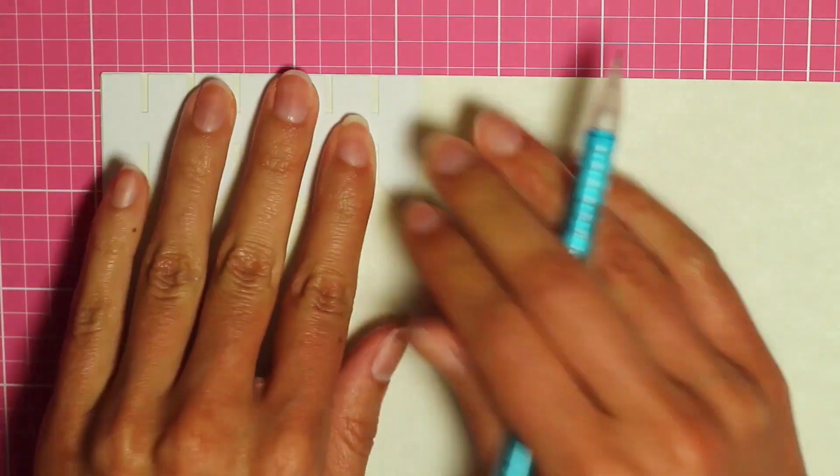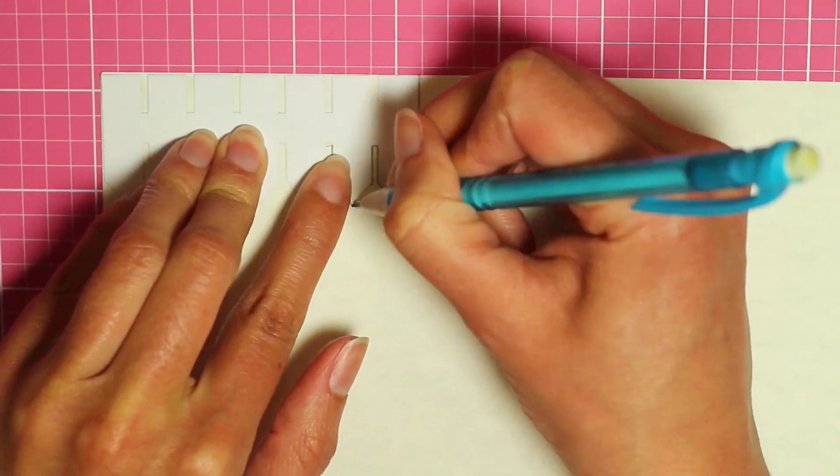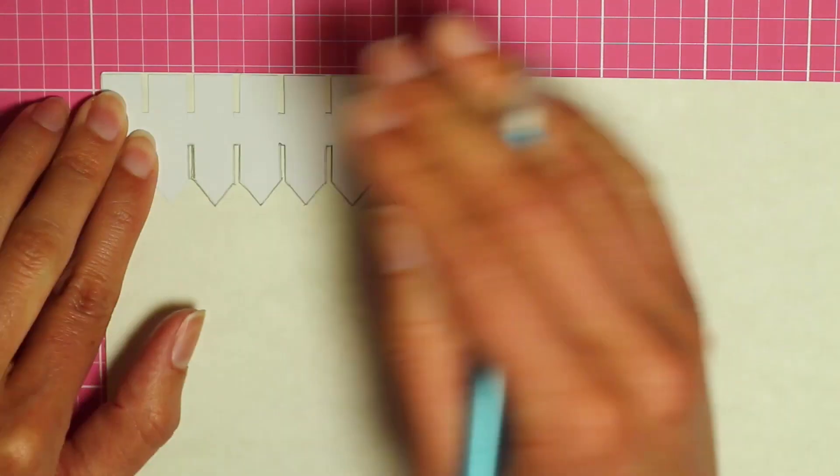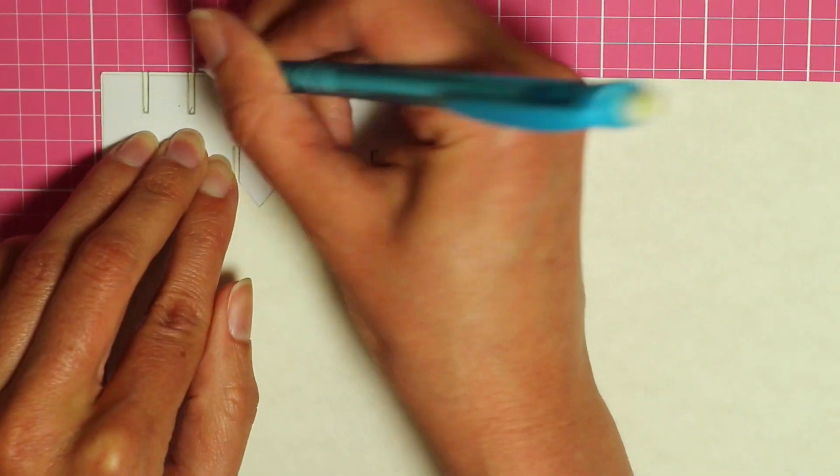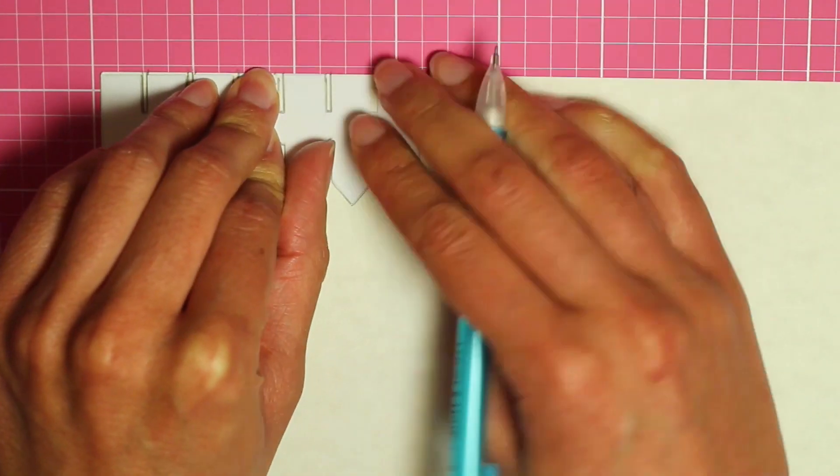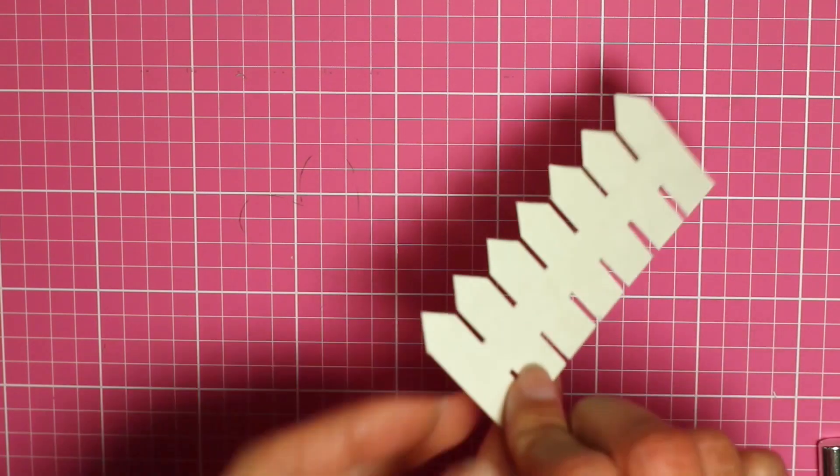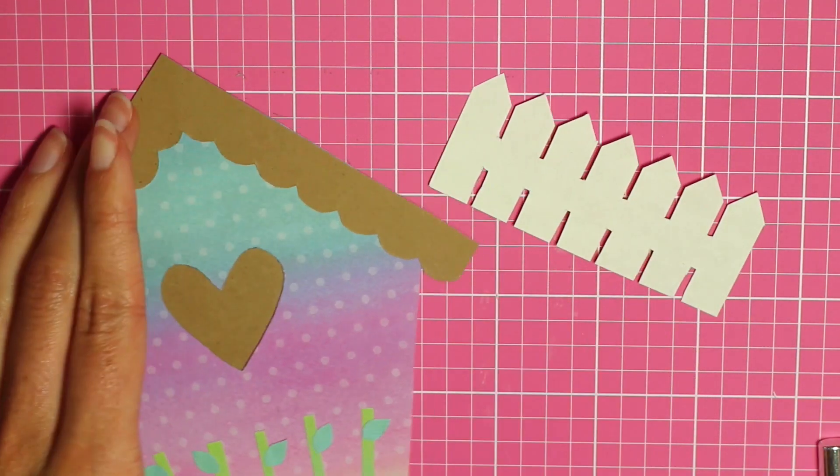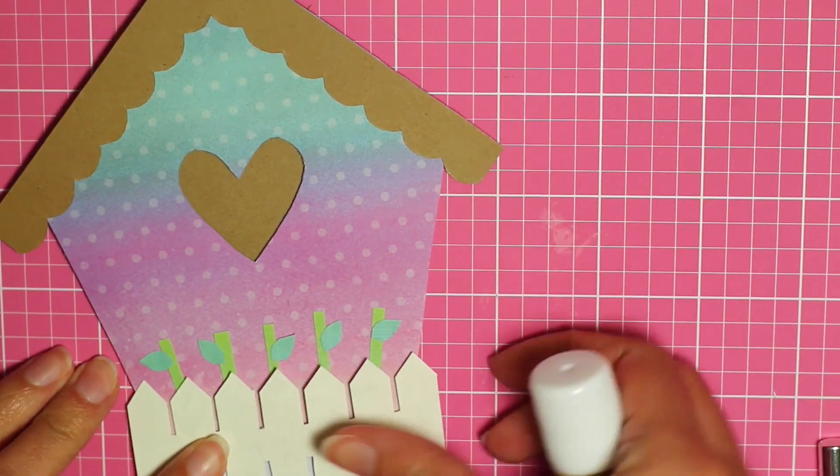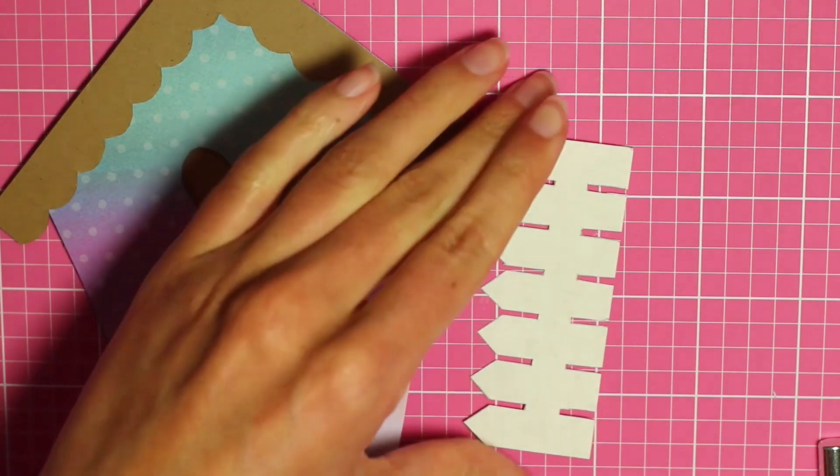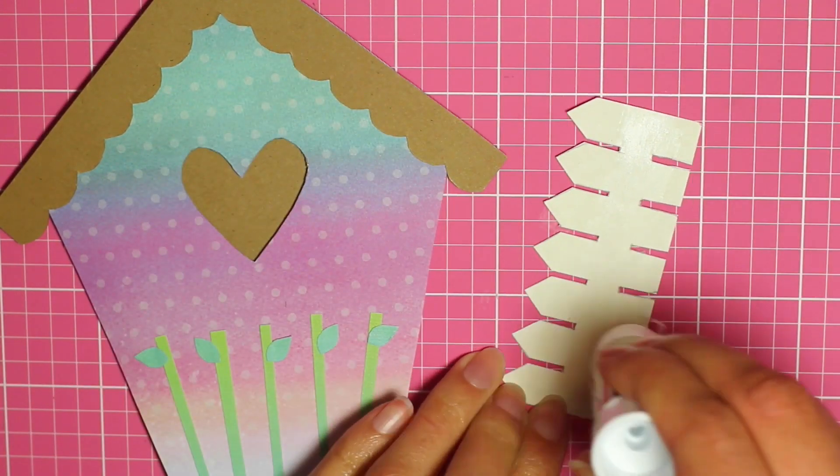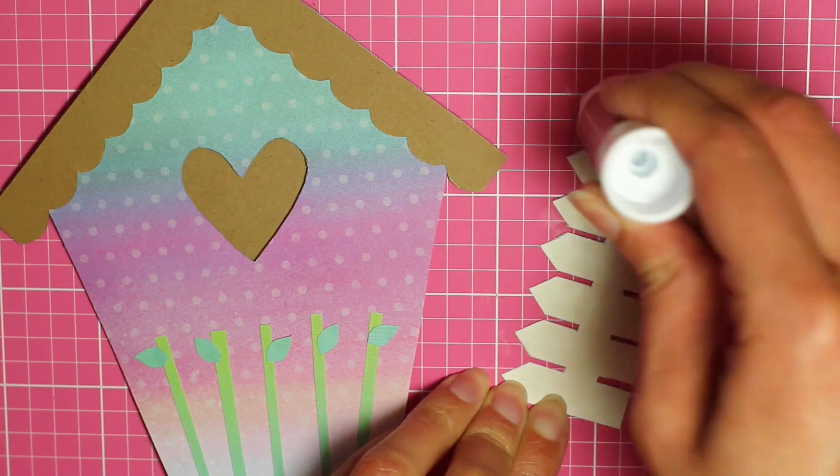Next I traced the fence pattern onto some cream colored card stock. And then I cut it out. And I used a glue stick to attach it to the front of the card. I placed the glue on the side with the pencil marks.